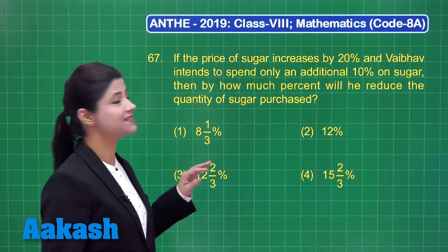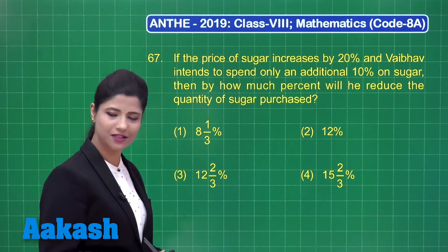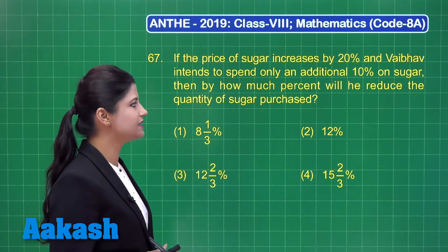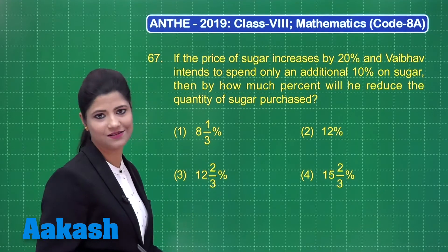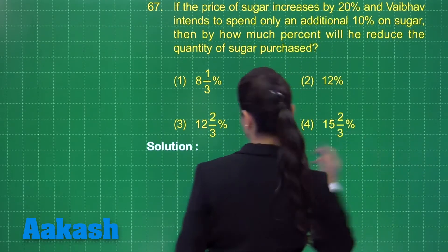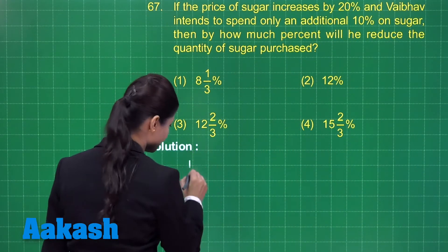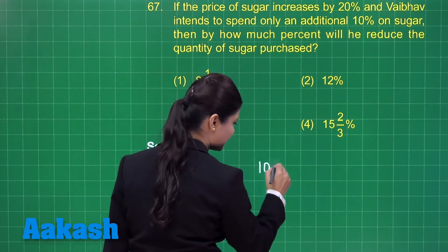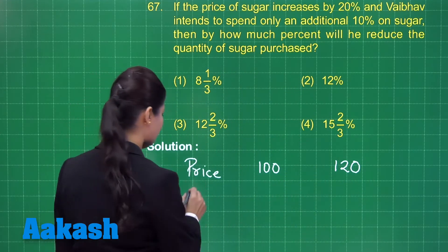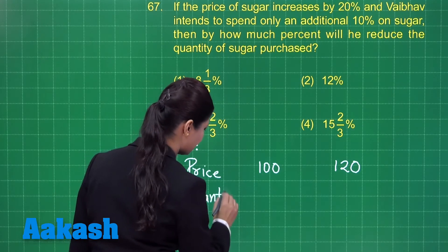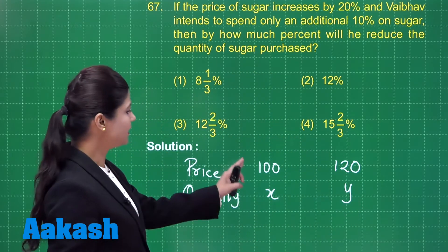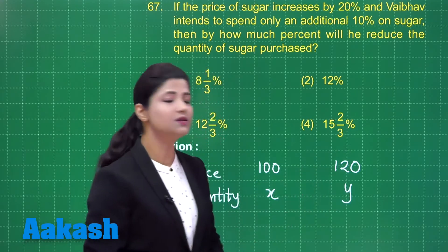Let us solve question number 67. It states that if the price of sugar increases by 20% and a person intends to spend only an additional 10% on sugar, then by how much percent will he reduce the quantity of sugar purchased? Let us consider the price of sugar per kg was rupees 100 earlier and it is increasing by 20% to 120 per kg. The quantity of sugar purchased earlier was x and now it is y, so total cost earlier is 100x and now it is 120y.